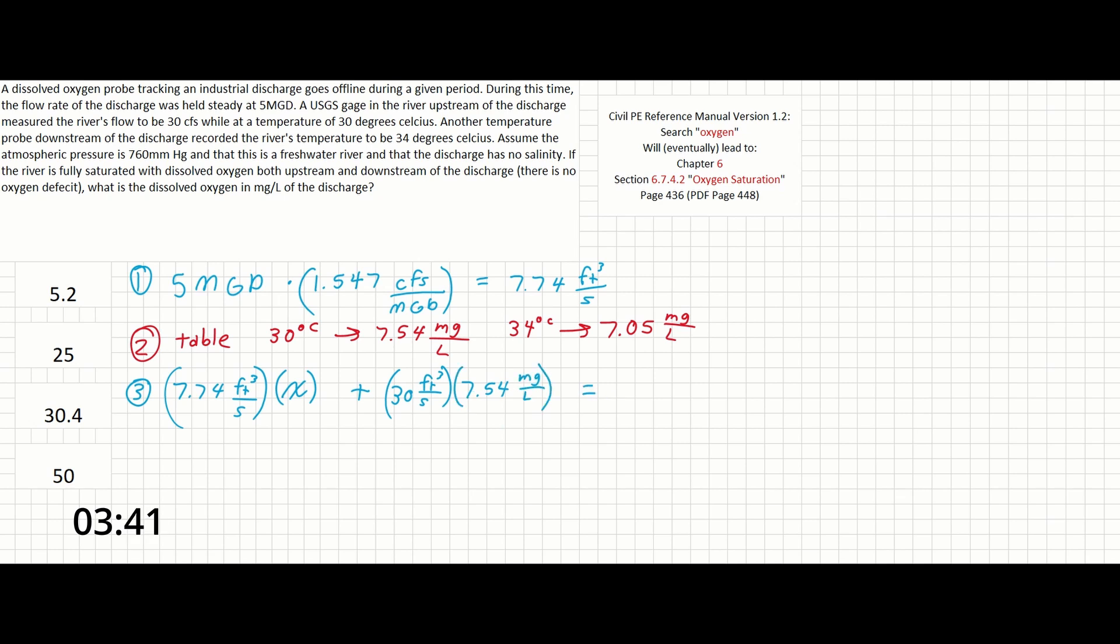Finally, the problem didn't give us the flow, but we need to know that the combined values from the discharge and the river are going to be the combined flow here. So 37.74, a combination of 30 and 7.74 cubic feet per second, times our corresponding DO for our 34 degrees here is 7.05 mg per liter.